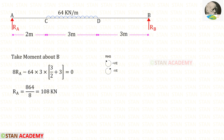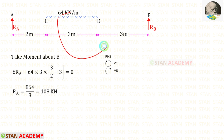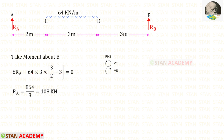First, let us find RA. For that, let us take moment about B. RA is acting in the clockwise direction, so it will be positive, and the distance is 8, so 8·RA. The uniformly distributed load is acting in the anti-clockwise direction, so it will be negative, and the distance is 3. We open a bracket, divide the distance by 2, and add the remaining distance of 3. For RA, we get 108 kilo Newton.